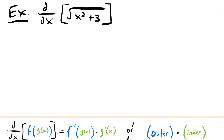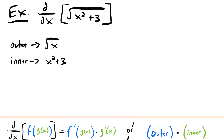For our next example, we want to find the derivative of the square root of x squared plus 3. This is a composite function where the outer function is the square root of x and the inner function is x squared plus 3. Plugging x squared plus 3 into the square root of x gives us this composite function.